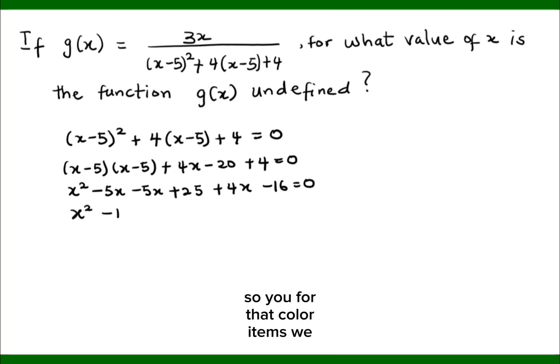So you fold that, collect like terms. We have x squared minus 10x plus 4x, then plus 25 minus 16 equals 0. x squared now is negative 6x plus 25 minus 16, that's plus 9, equals 0.